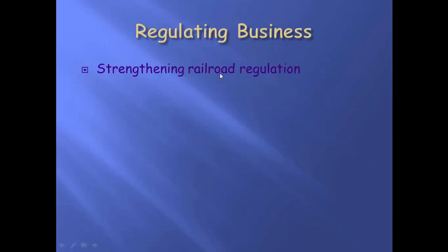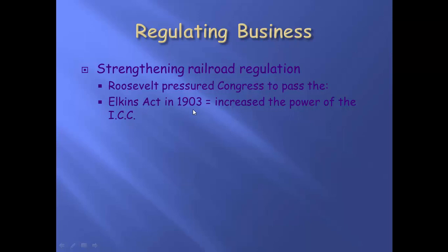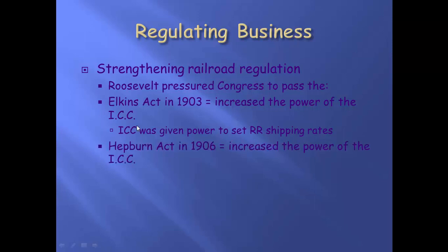He steps in and regulates business. He really wanted to strengthen regulating the railroads because they were involved in practices that weren't in the public's favor. So he pressures Congress to pass the Elkins Act of 1903, which increases the power and viability of the Interstate Commerce Commission. That came around in 1887 as the first regulatory agency. They were given the power to set railroad shipping rates, to make sure the rates these railroad companies were issuing were fair to consumers. A couple years later, he comes out with the Hepburn Act with Congress, which gives the ICC even more power.